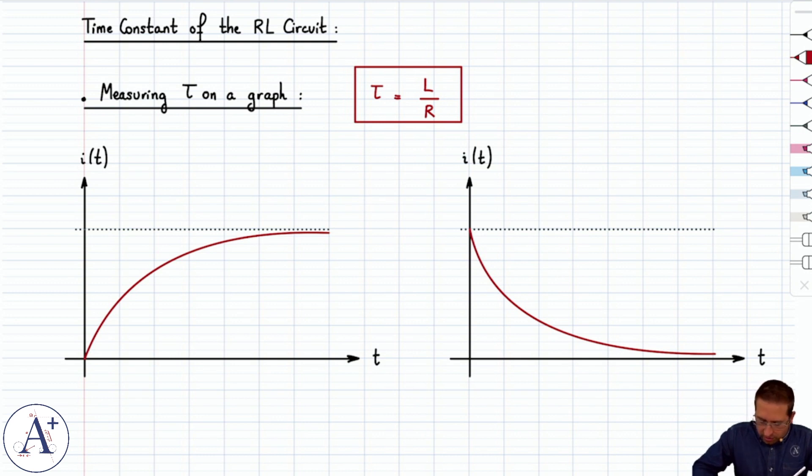So the first method is to use the graph and to say that this is Imax, which is the steady current that you reach in the case of a rising current. Here, call this Imax or I0. In the case of a falling current, it's the current that you start with, and then it falls exponentially. And tau is going to be the time that it takes to reach two-thirds of Imax or for the value of I0 to drop by two-thirds.